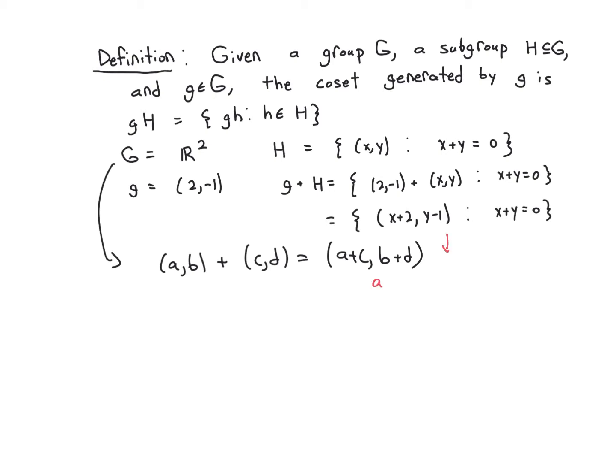Of course, if you decide to do a substitution, say let a equal x plus 2 and b equal y minus 1, then of course you can see that a plus b is equal to x plus 2 plus y minus 1, x plus y is 0, so you get 2 minus 1 is 1. So you can prove that this set is actually the set of all ordered pairs where a plus b equals 1.